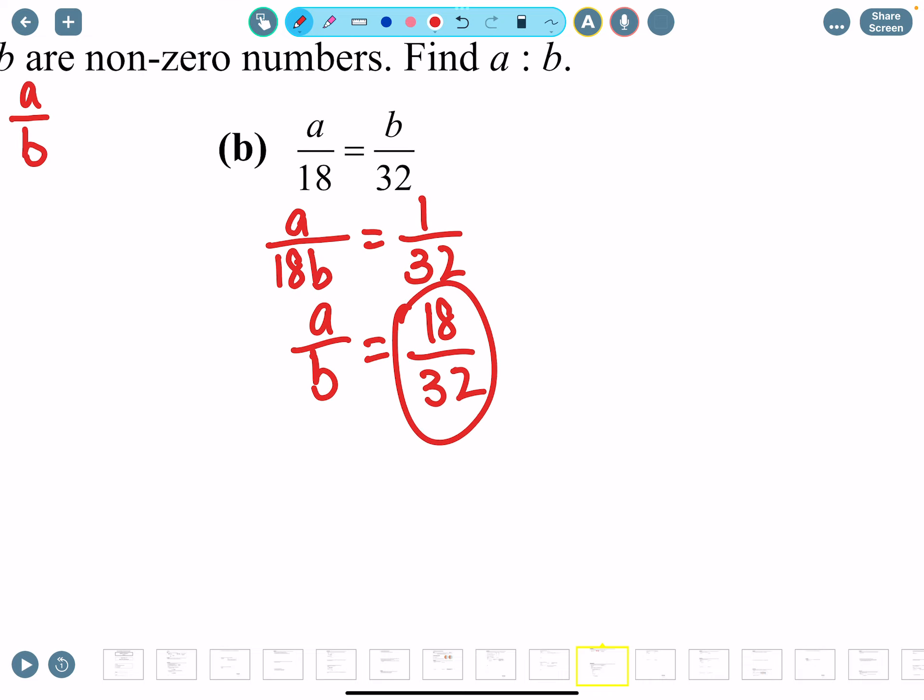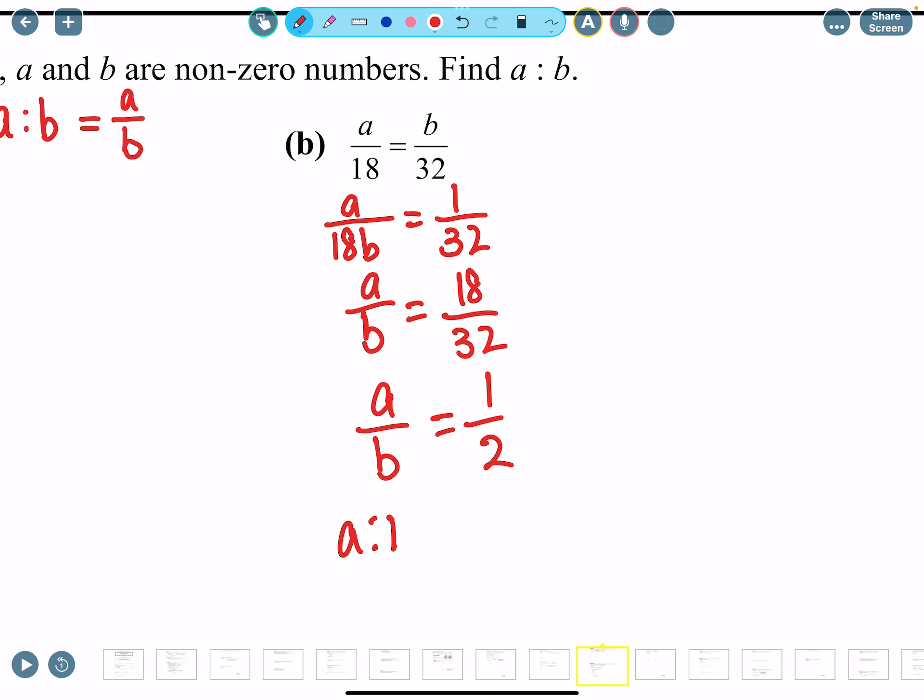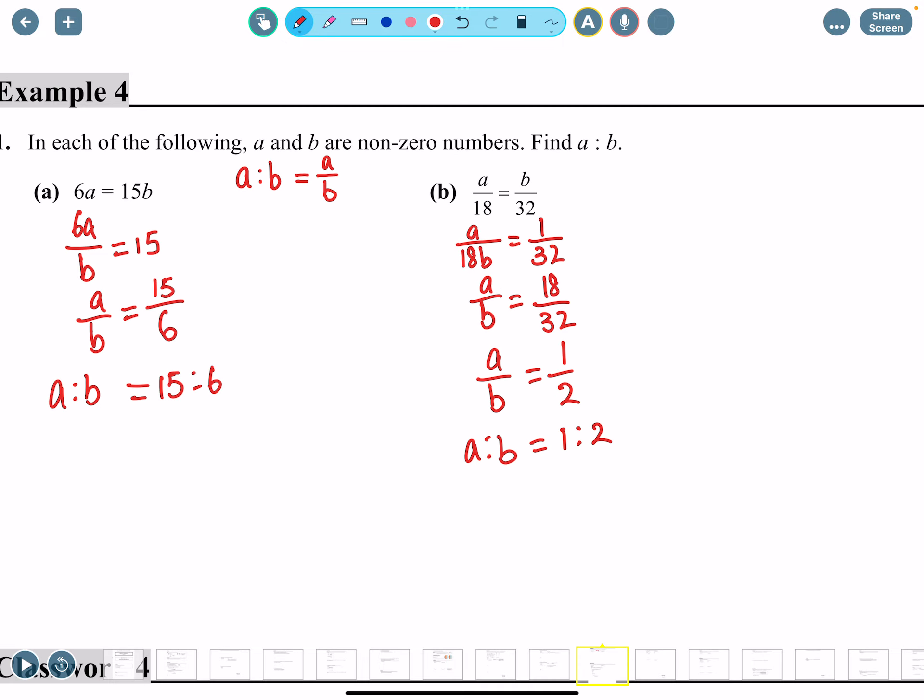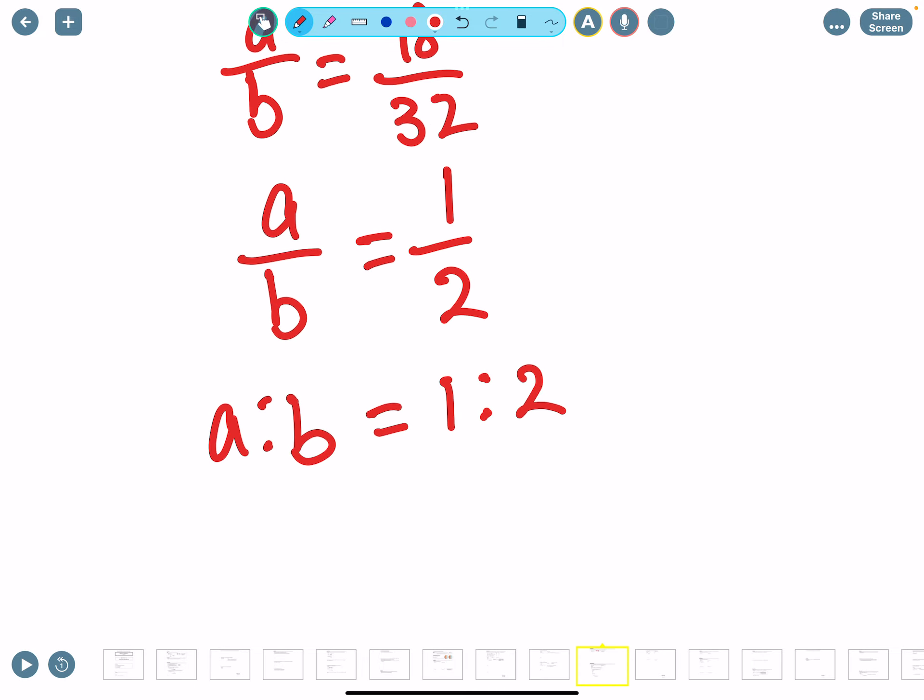Now this one, in your calculator, 18 divided by 32 can be simplified. If you do shift ABC it's going to be 1 over 2, so make sure you simplify before you end your answer. A to b is 1 to 2, so you can see that b is 2 times larger than a.